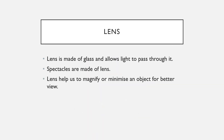Next is the lens. All of us have seen a lens at some point. A lens is made up of glass and is used to magnify or minimize an object for a better view. We have used a magnifying glass to see the minute letters in a book — they appear enlarged in size.